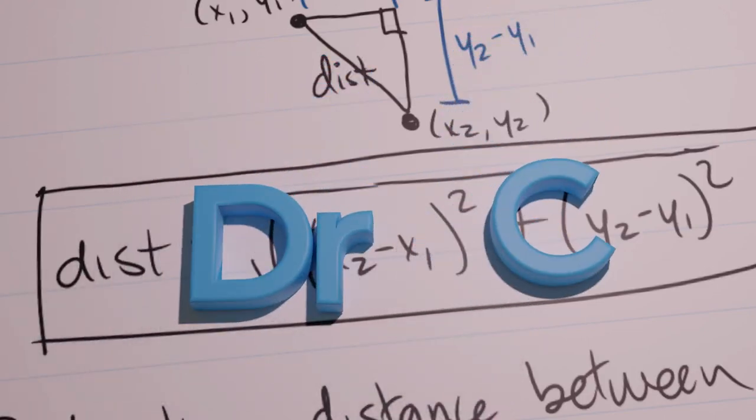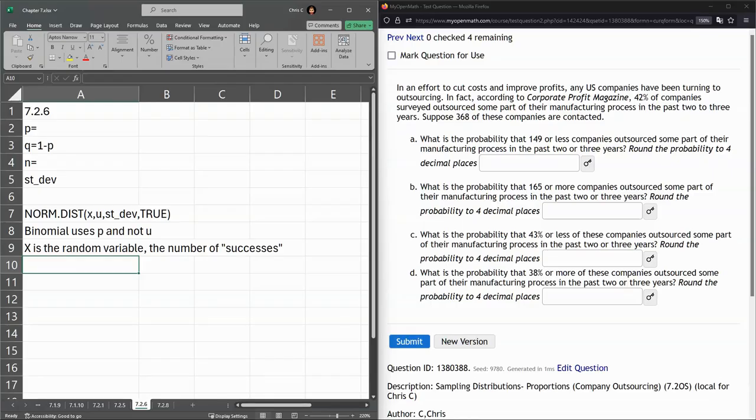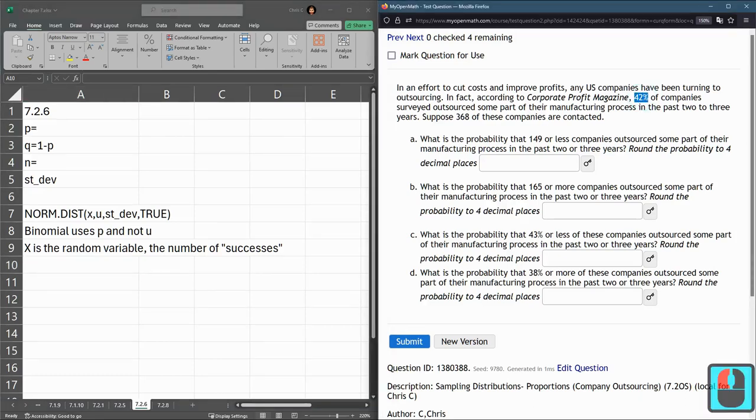We're going to look at this problem 7.2.6 where we will use a normal distribution, but this time we have a binomial, which means there's a percentage in the population. We're going to look at a sample and see what the probability of that sample having a certain characteristic.